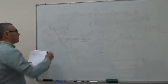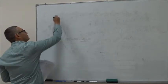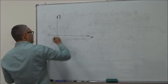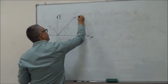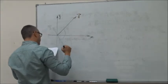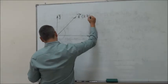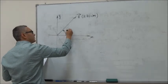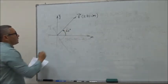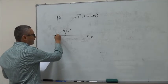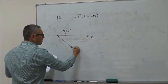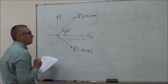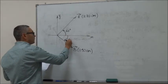In this exercise, we are given the following diagram. We have x and y coordinates, and then we have an A vector pointing this way, which has a length of 2.80 cm and is making an angle of 60 degrees with the x-axis. Then another vector B pointing this way, which has a length of 1.90 cm and is also making an angle of 60 degrees.